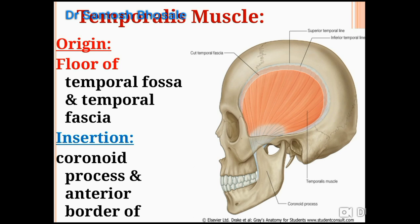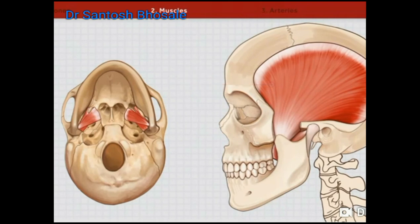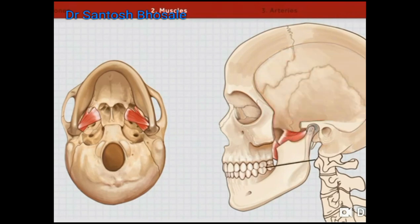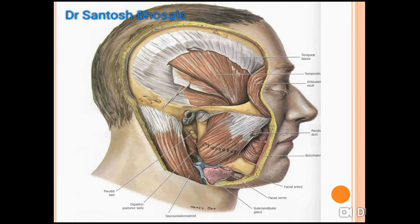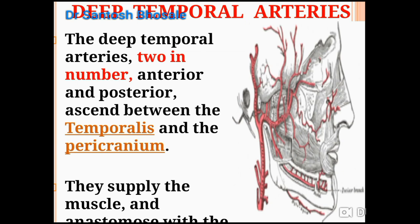The temporalis muscle is a muscle of mastication taking origin from the temporal fascia and the floor of the temporal fossa. The anterior fibers are vertical and the posterior fibers are horizontal. It inserts into the coronoid process and the anterior border of the ramus of the mandible. It is supplied by the deep temporal nerves, a branch of the anterior division of the mandibular nerve. This muscle is derived from the first arch.